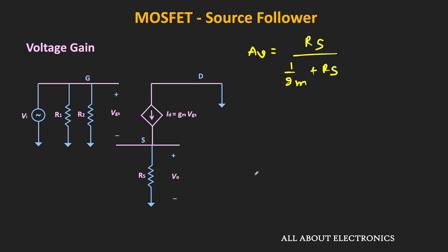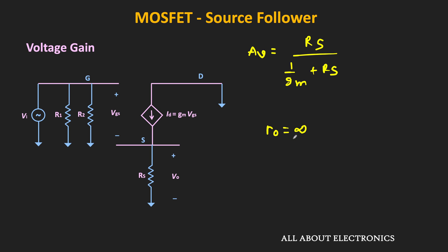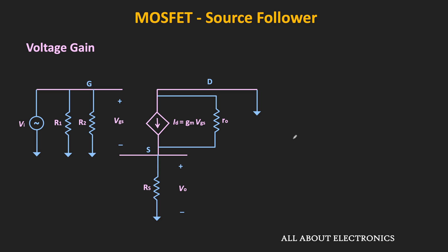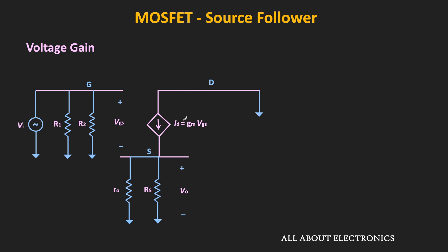So far in our discussion, we have neglected the effect of channel length modulation, meaning we assumed the output resistance r0 is infinite. But if the output resistance is finite, it will appear between the drain and the source terminal. Since the drain is at AC ground, it will effectively appear between the source and the ground terminal. That means in the voltage gain expression, instead of Rs, there will be Rs parallel r0. With finite output resistance, the voltage gain equals (Rs parallel r0) divided by (1/Gm plus Rs parallel r0).